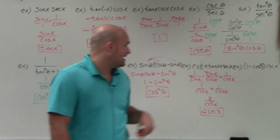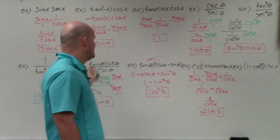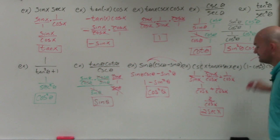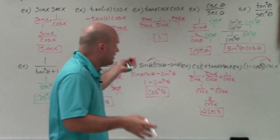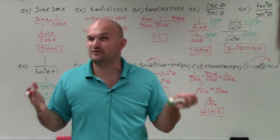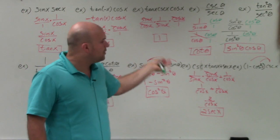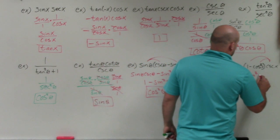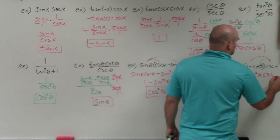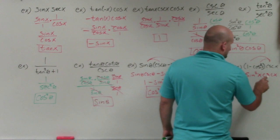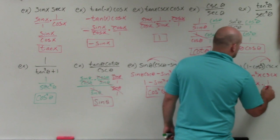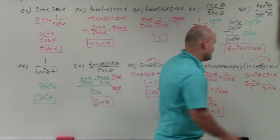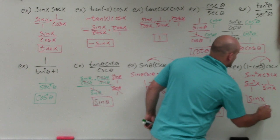In the last example, I have cosecant of x times the quantity 1 minus cosine squared. Whenever you see a squared term, always look for your Pythagorean identities. I recognize that 1 minus cosine squared equals sine squared of x. So I'm multiplying cosecant of x by sine squared of x. Rewriting in terms of sines and cosines, one sine of x divides into sine squared of x, leaving a final answer of sine of x.